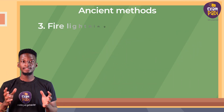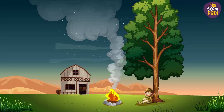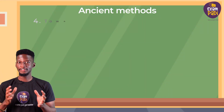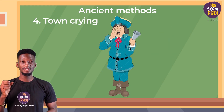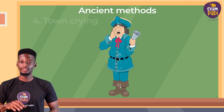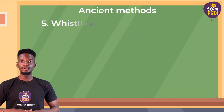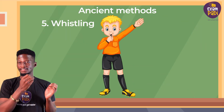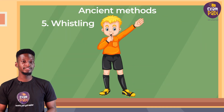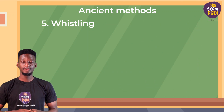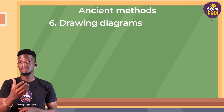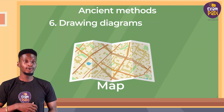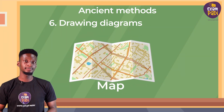3. Fire lighting — this is used to indicate the presence of someone at a particular spot. 4. Town crier — this means using a person to pass information from the village head or clan head to the people. 5. Whistling — blowing of whistles could be used to draw people's attention or pass information across in some places. 6. Drawing diagrams — this involves sketching images and pasting them on walls or on the ground to transmit information.